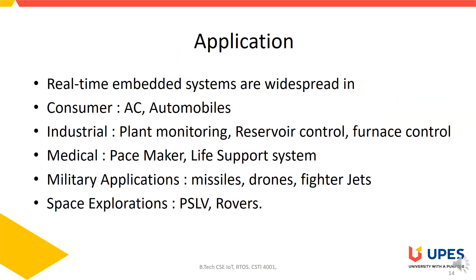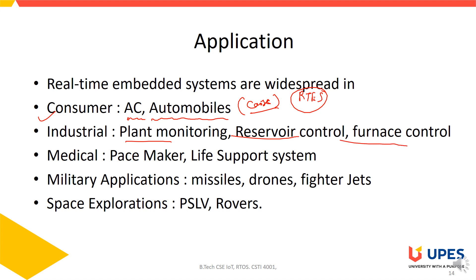Applications of real-time embedded systems include consumer goods such as air conditioning systems and automobiles — modern cars have multiple sensors and embedded systems, most of which are real-time. In industry, we have plant monitoring, reservoir control, and furnace control. In medical, we have pacemakers and life support (ventilator) systems. In military, missiles, drones, and fighter jets. In space exploration, PSLV for satellite launch and rovers for navigation in unknown space.